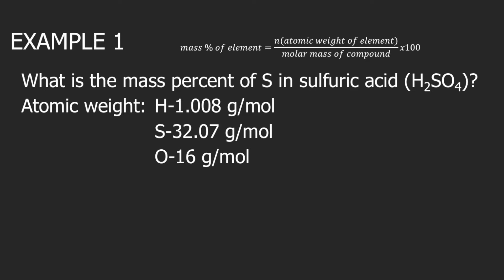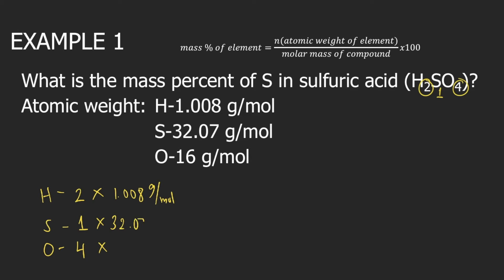It is composed of three elements: hydrogen, sulfur, and oxygen. So you have two hydrogen atoms, one sulfur atom, and four oxygen atoms. We multiply by the atomic weight of hydrogen, 1.008, for sulfur 32.07, and for oxygen 16 grams per mole.